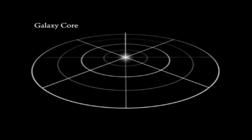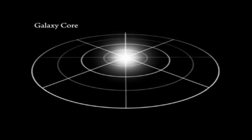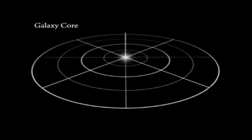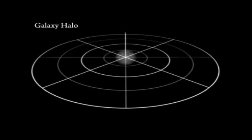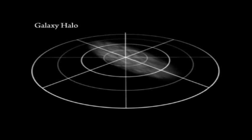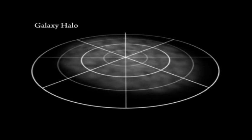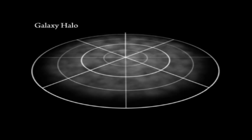The galaxy core is created using a simple volume light. The galaxy halo is created using a light stretched with added fractal noise.